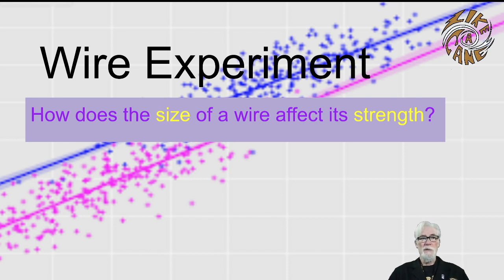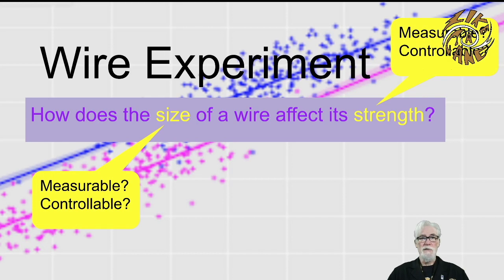For a good experimental design, we need to think about how can we measure the wire's size and how can we control or dictate it? We also need to ask the same questions about the strength of the wire. Is it measurable? And is there a way that we could control its size? We also need to ask ourselves, is it likely that these two quantities are related to each other? In other words, does changing one cause the other one also to be changed?